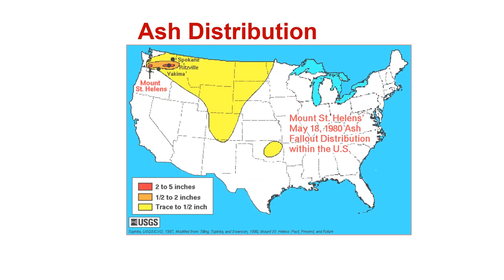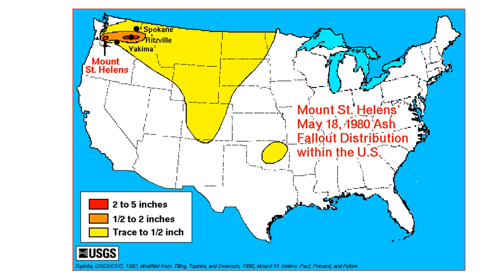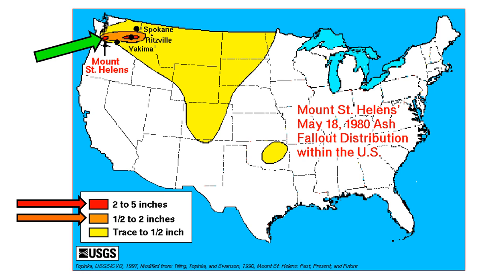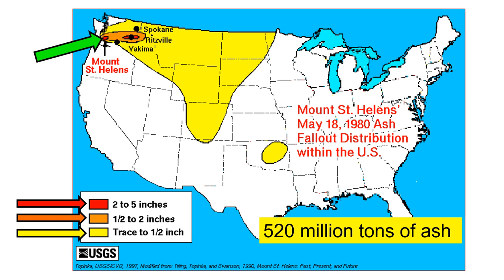The ash distribution. Here is the map of the United States showing the fallout of ash. Right here at the green arrow is Mount St. Helens. The red shows that two to five inches of ash fell to the ground. The orange shows one half to two inches of ash on the ground. And the yellow traced to one half. In all, approximately 520 million tons of ash fell to the ground.